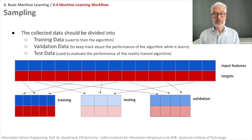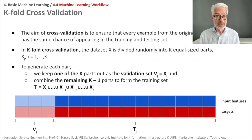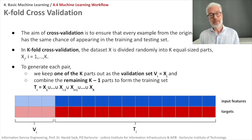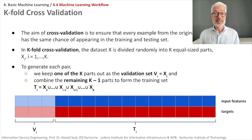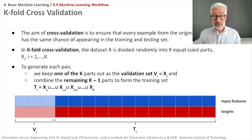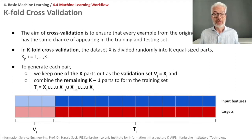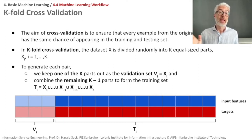What you do then is so-called k-fold cross-validation. In k-fold cross-validation, you try to use your entire available data while separating parts for validation or test data, doing different samplings, and in the end taking the average of all your results. A data set X is divided randomly into k equal-sized parts x_i, ranging from 1 to k.